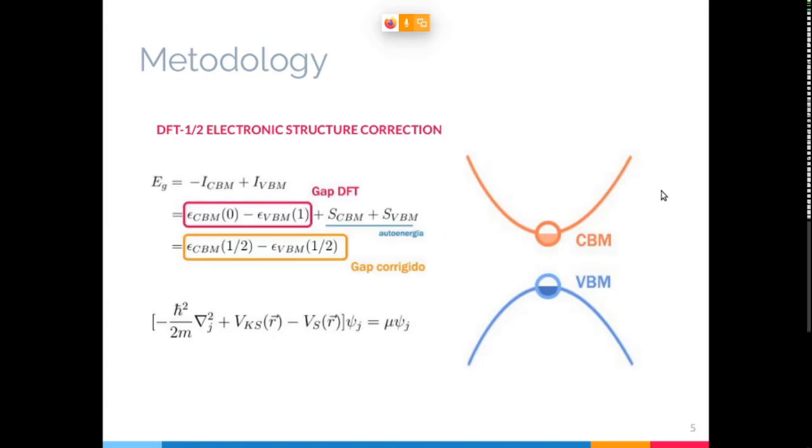And one advantage of our methodology is that we use the DFT minus half correction, which was developed by our group in 2008. It's a correction method that you can achieve better band gaps than default DFT, which are known to be underestimated. There are other correction methods in the literature such as GW and hybrid functionals, but the DFT minus half is actually much less computationally costly.